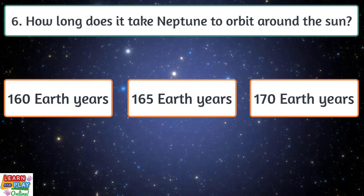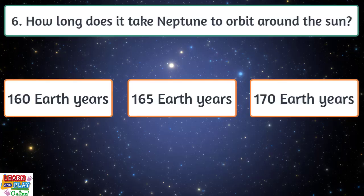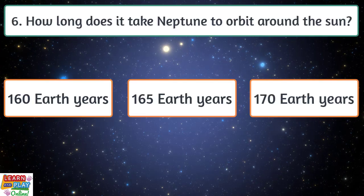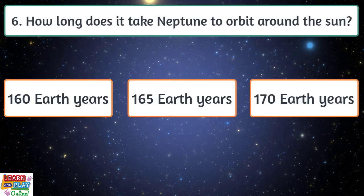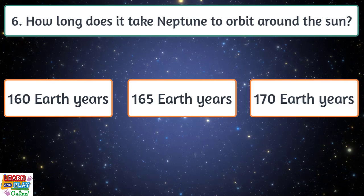Question six. How long does it take Neptune to orbit around the Sun? 160 Earth years, 165 Earth years, or 170 Earth years?